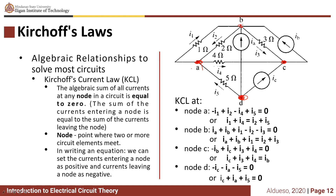Now applying KCL at node B, there are five elements connected. IA is entering node B, so: IA plus IB plus I1 minus I2 minus I3 equals zero. Rearranging, the currents entering the node — IA plus IB plus I1 — are equivalent to I2 plus I3.